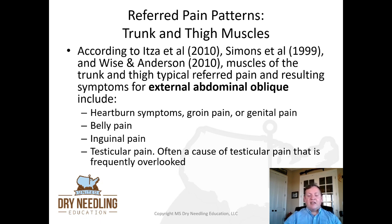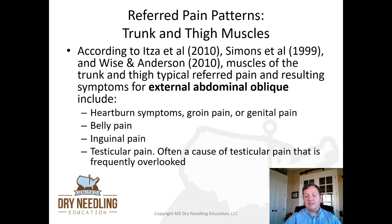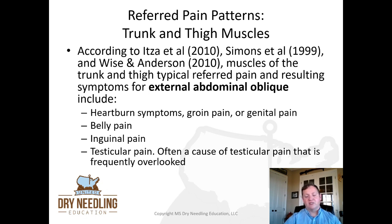For the external abdominal oblique, that can give you heartburn symptoms, groin pain or genital pain, belly pain, inguinal pain, and also testicular pain in individuals with male anatomy. It's often a cause of testicular pain that is frequently overlooked. Anytime I'm treating a male anatomy individual with testicular pain, I always, always include treatment of the external abdominal oblique.